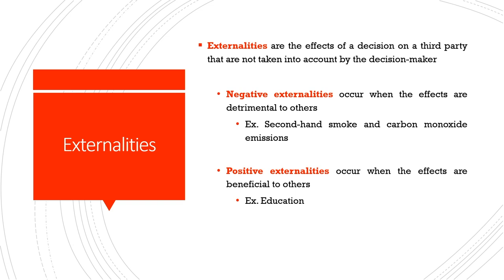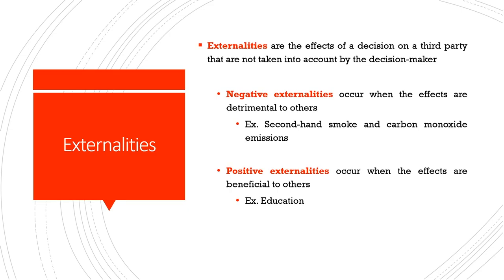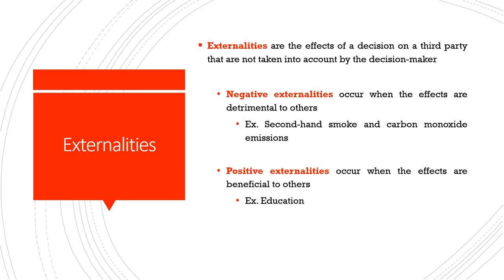When the impact on the third party is negative, we refer to it as a negative externality — considered detrimental to others. Examples include secondhand smoke, carbon monoxide emissions, and pollution. Positive externalities can also take place: if I buy a vaccine and the benefits of my vaccination positively impact a third person, that is a positive externality. Positive externalities occur when the effects are beneficial to others. I encourage learners to come up with many more examples of positive and negative externalities on their own.